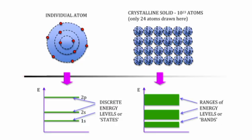In this picture, the left-hand side shows an individual atom, whereas on the right side, in crystalline solids there are around 10 to the power 23 atoms present. For one individual atom, 1s, 2s, 2p are the discrete energy levels or states, whereas in the crystalline solid with around 10 to the power 23 atoms, there will be ranges of energy levels or energy bands corresponding to the 1s, 2s, 2p states, and so on.